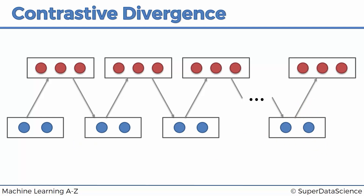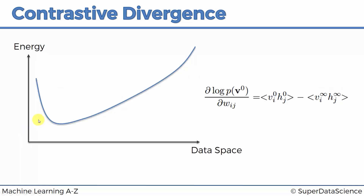Now let's look at what this process looks like in terms of an energy curve. We've got a gradient formula here — the gradient of the log probability of a certain state of our system based on the weights. Remember, through this whole process the weights were constant. But this formula tells us how changing the weights will affect the log probability.